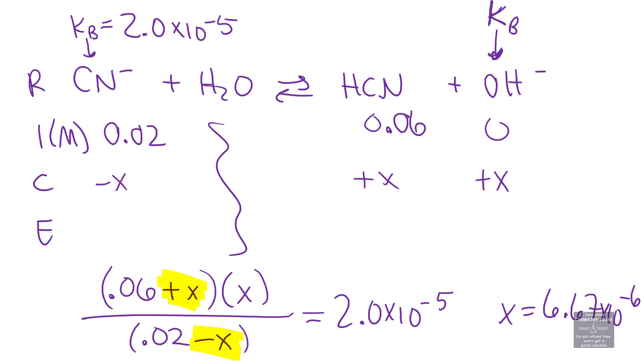The final equilibrium concentration of all species is 0.02 molar cyanide, 0.06 molar HCN, and 6.67 times 10^-6 molar hydroxide.